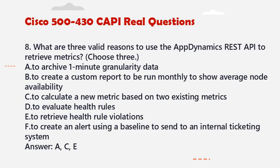Question 8: What are three valid reasons to use the AppDynamics REST API to retrieve metrics? Choose three. A. To archive one-minute granularity data. B. To create a custom report to be run monthly to show average node availability. C. To calculate a new metric based on two existing metrics. D. To evaluate health rules. E. To retrieve health rule violations. F. To create an alert using a baseline to send to an internal ticketing system. Answer: A, C, E.